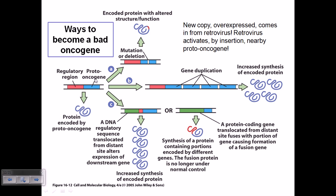Proto-oncogene is a normal version of the gene, but it is prone to produce some other gene that can produce cancer — that's why it is called the proto-oncogene. Oncogene means it can develop cancer. The previous safe form is called proto-oncogene, but it is much more vulnerable to produce oncogene. Generally proto-oncogenes are those genes associated with any kind of mutation that can give rise to malicious function protein production.